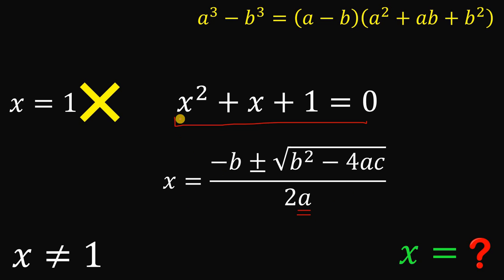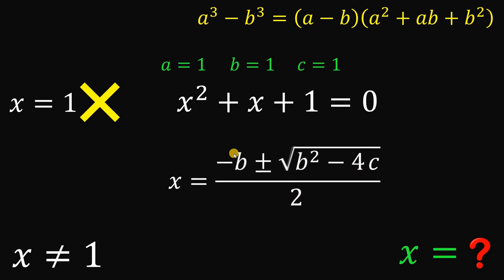Now this a right here represents the coefficient of x squared which is positive 1. This b is the coefficient of x which is positive 1 again. And this c is the constant term which is positive 1 again. Alright. So now let's replace all of this a with positive 1, next all of this b with positive 1, and this c with positive 1.